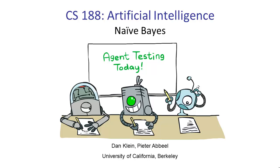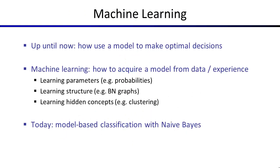Today we're going to be talking about machine learning. In particular, we're going to be talking about a very common method for building classifiers called Naive Bayes. Don't panic from this cartoon — there's not actually a quiz today, it's just a cartoon. We're going to be talking about how a robot should learn from data in order to do well on an exam.